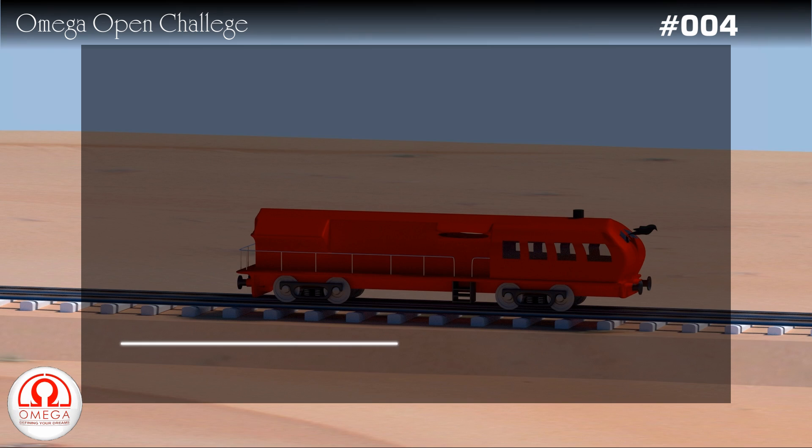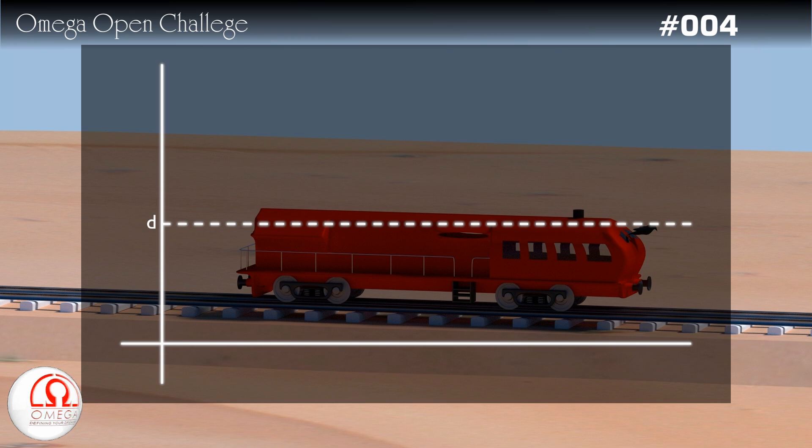So let's take our axis and draw a line marking displacement d, that is the initial distance between the train and the wall. Also, assume the speed of the train to be u and that of the bird to be v.